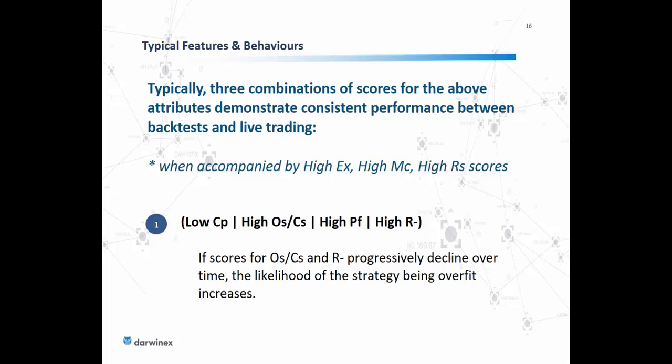Typically there are three combinations of scores for the above attributes that demonstrate consistent performance between backtests and live trading, only when accompanied by high scores of experience, market correlation, and risk stability. The first combination encapsulates low scores for capacity, high scores for open-close strategy, high scores for performance, and high scores for negative returns consistency. If scores for open-close strategy and negative returns consistency progressively decline over time, the likelihood of the strategy being overfit increases.